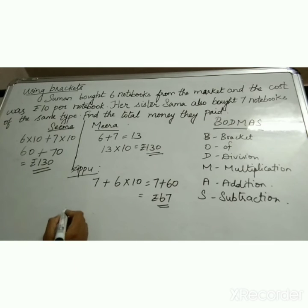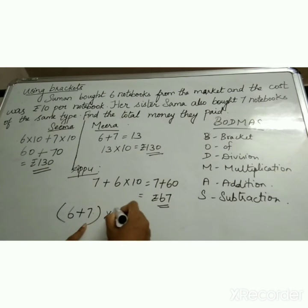So how can we use brackets now? Can I write it as 6 plus 7 in one bracket? So 6 notebooks and 7 notebooks into 10. So I am using brackets here.